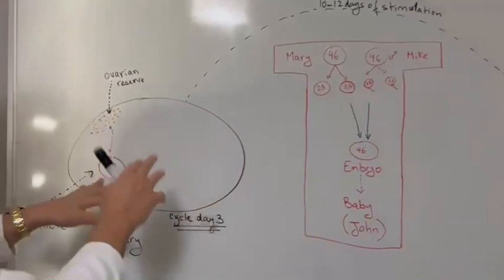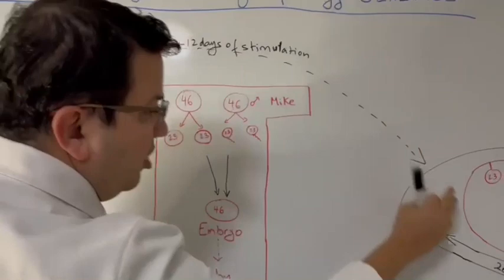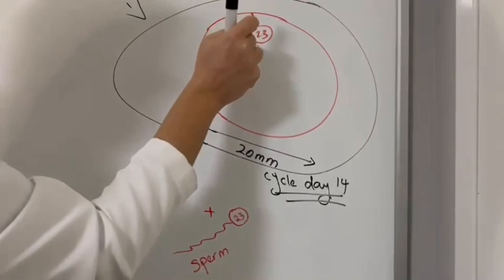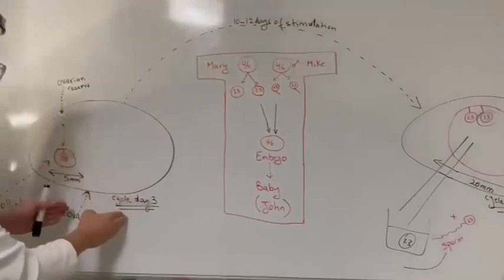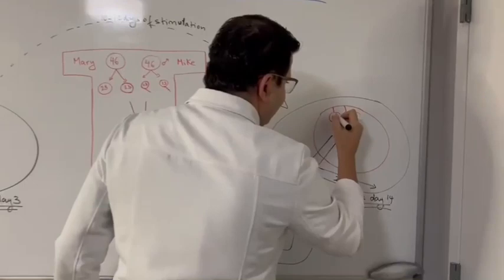Now when this egg matures or you stimulate with the drugs, on cycle day 14, which is around the time of ovulation, the follicle becomes 20 millimeters. This is when the DNA is split into 23 and 23. But guess what? A lot of studies show that the more medications you give early on for those follicles, the more likely this egg is going to split unequally.